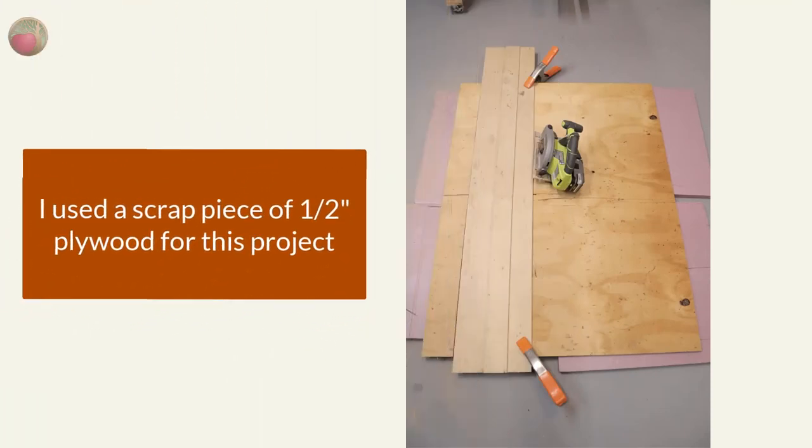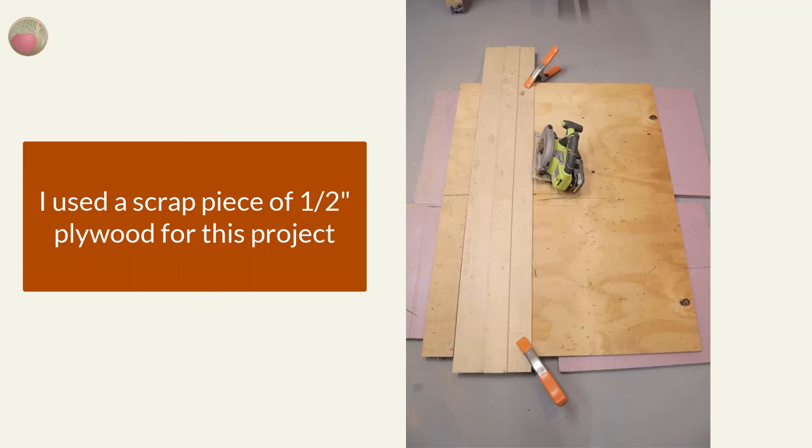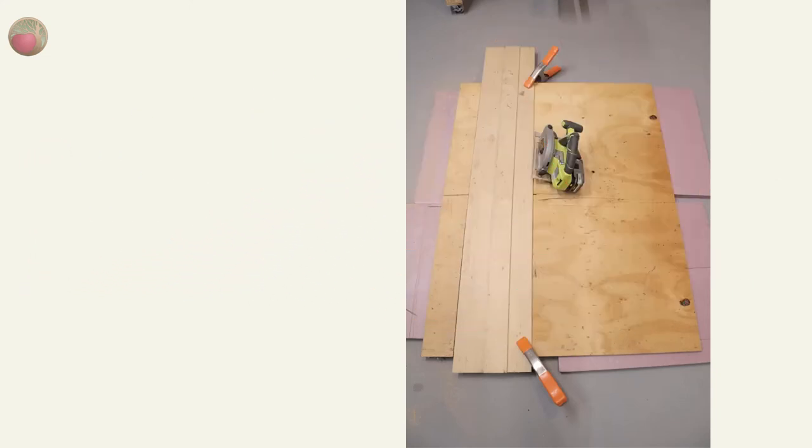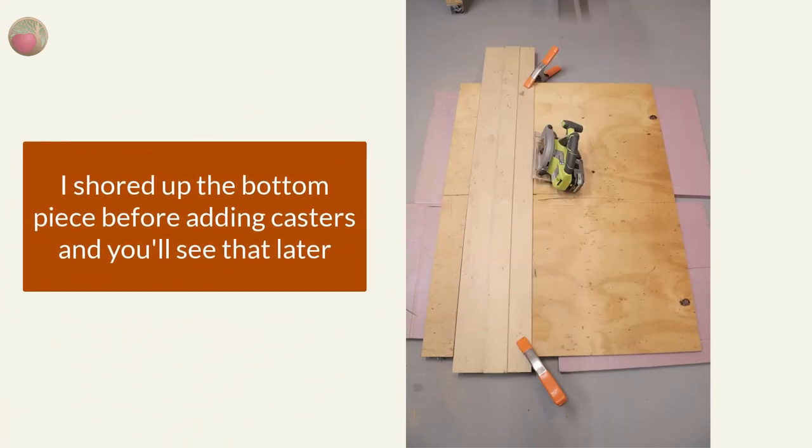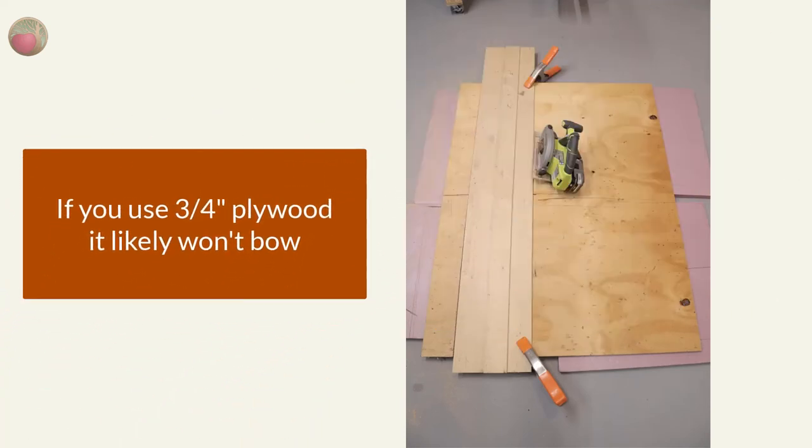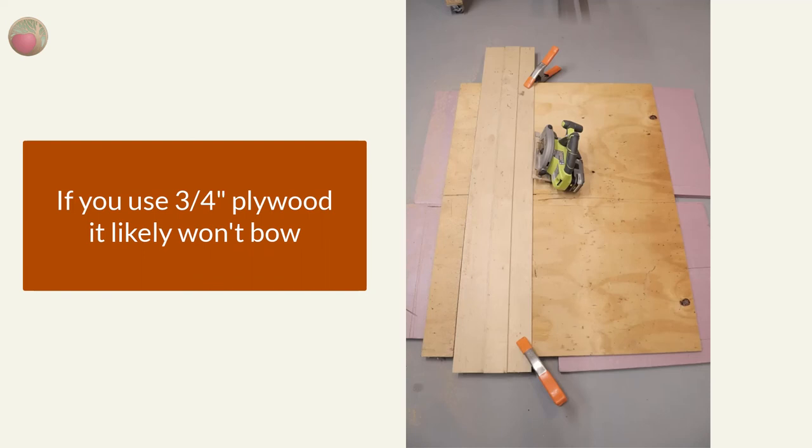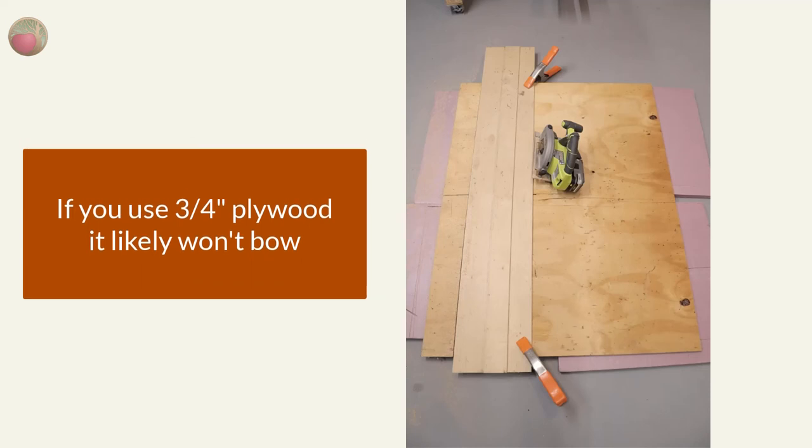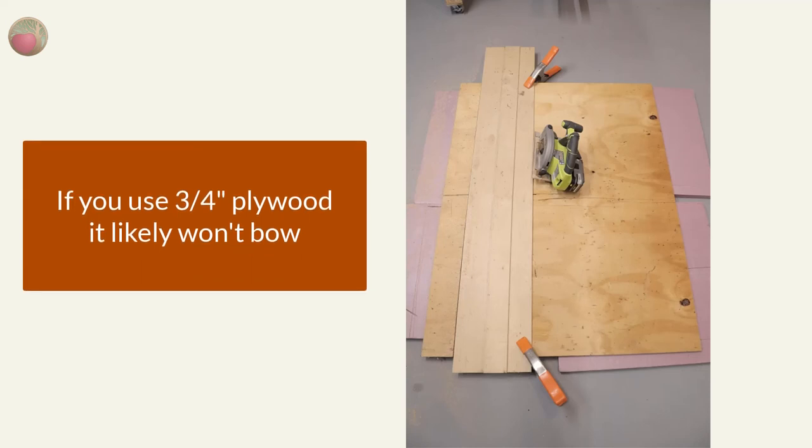Now I used all scrap wood for this project. And I had a piece of scrap half inch plywood available, so that's what I chose. Now note, I did shore up the bottom of it when installing the casters so it would not bow. If you have a three quarter inch plywood piece, you likely won't have to take that extra step later, especially if your dog is small.